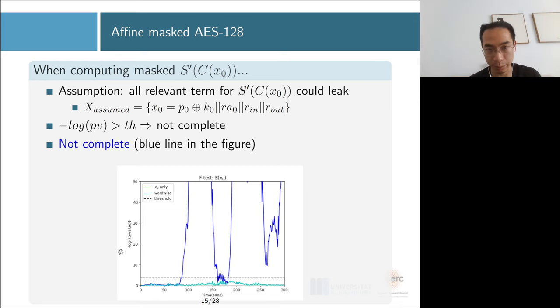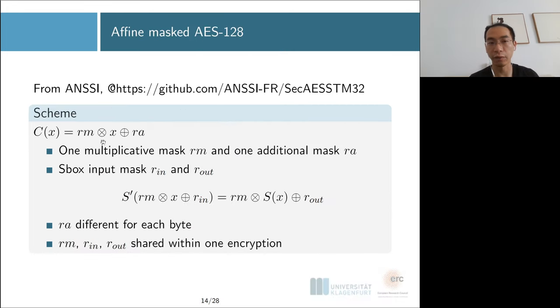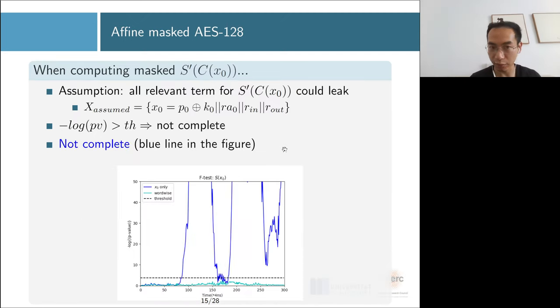We would like to verify the traces for computing the first S-box. Our trivial assumption is computing the first S-box will only leak everything related to the first S-box. All the relevant terms will be X0 and the masks rm, ra0, rin, and rout. We got everything here. If it's above the dash line, that means you fail the test—you are missing something. The blue line here shows the X0-only model is missing a lot of information.